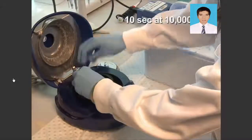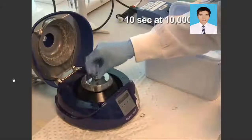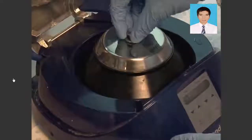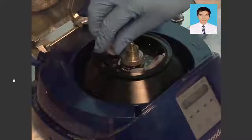Centrifuge the tubes for 10 seconds at 10,000 G's to ensure the DNA is at the bottom of the tube. The denatured DNA samples are now ready for bisulfite deamination, which will be demonstrated next.